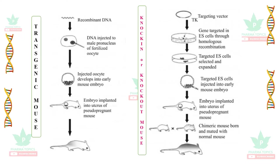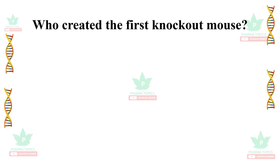The next category is the knock-in or knock-out mouse. A targeting vector is used to knock in or knock out particular genes, and the embryo is implanted into the uterus of a pseudopregnant mouse. The chimeric mouse born is then mated with a normal mouse, giving rise to offspring that are knock-in or knock-out mice.